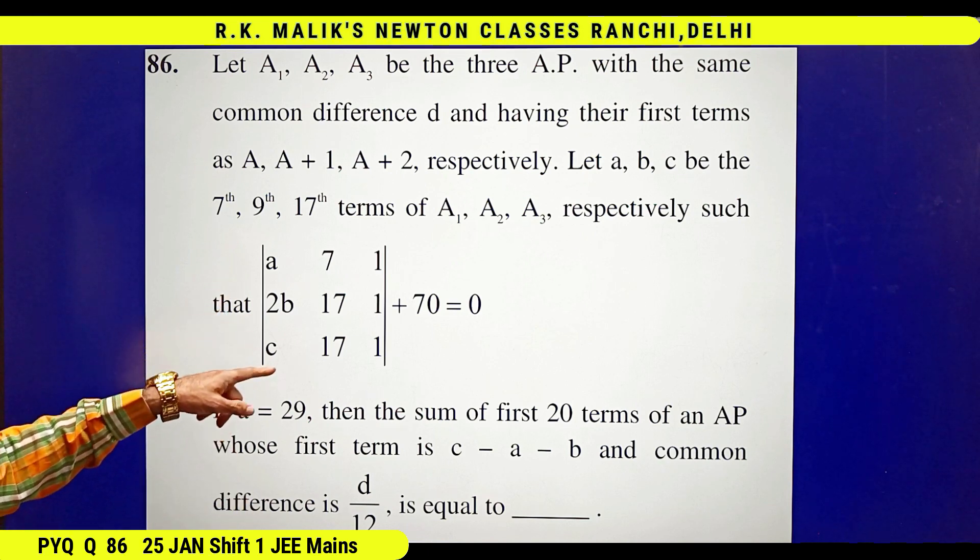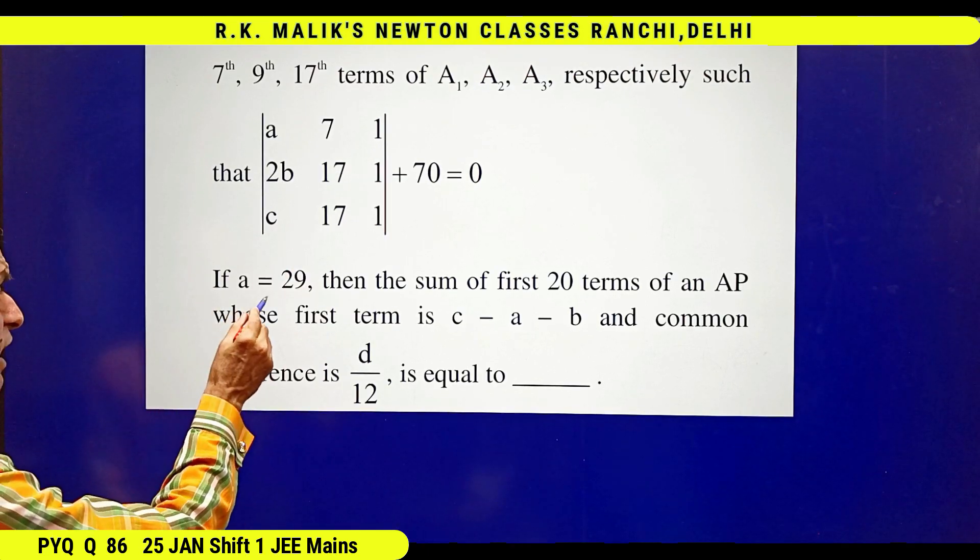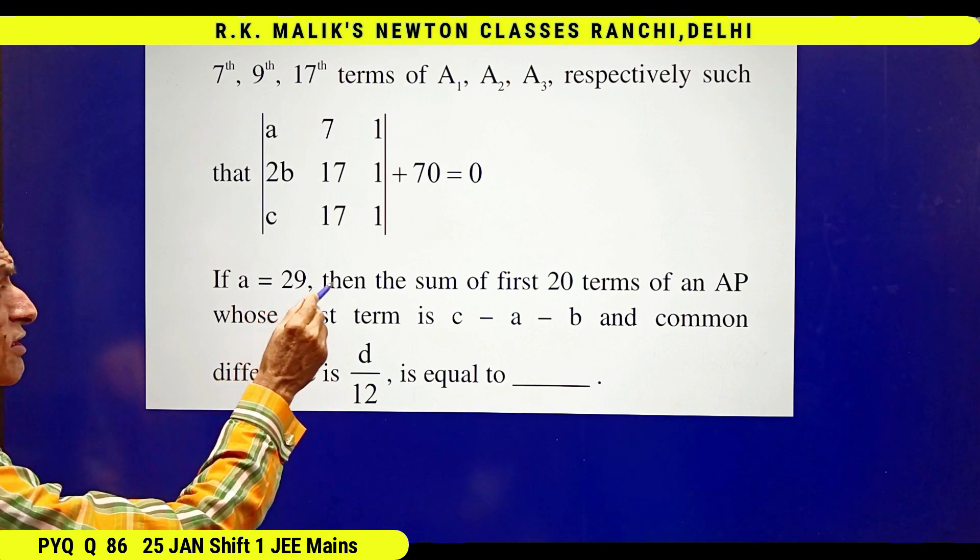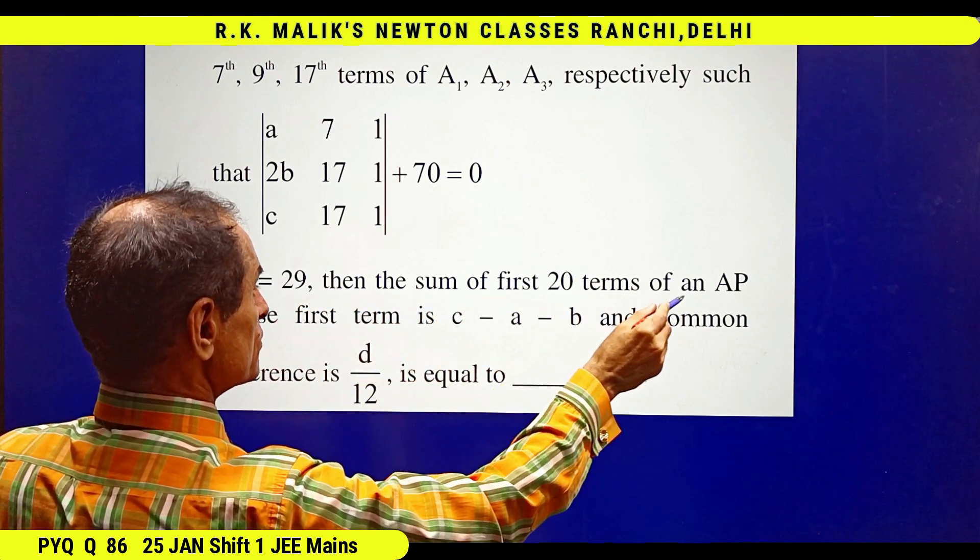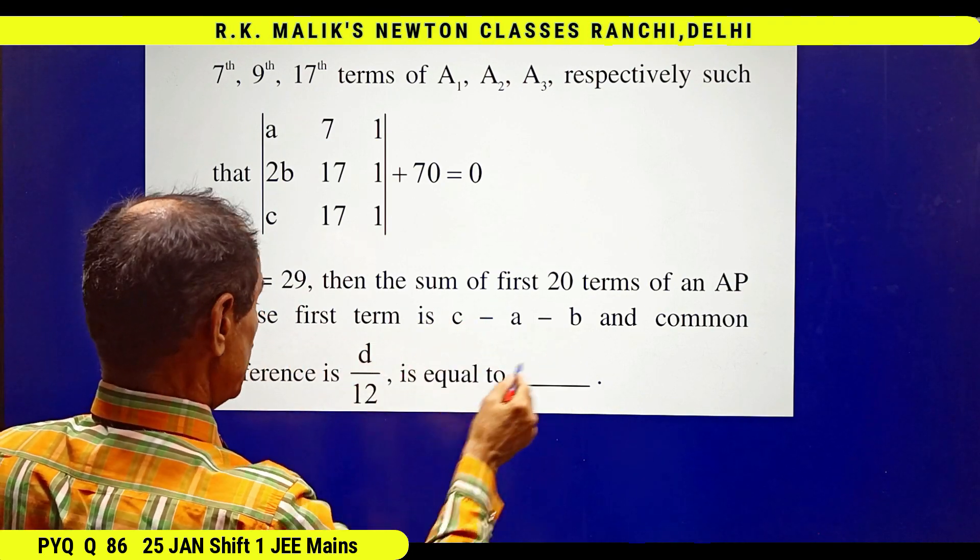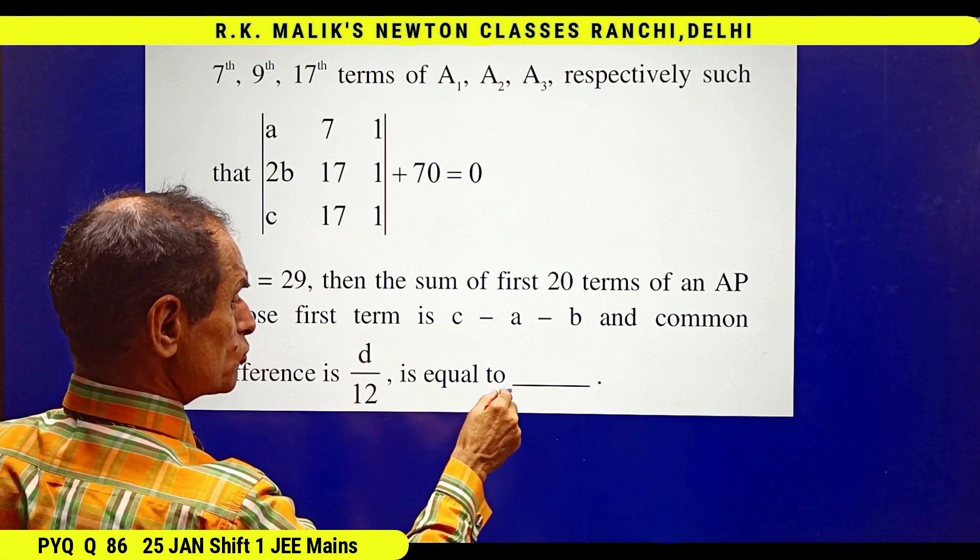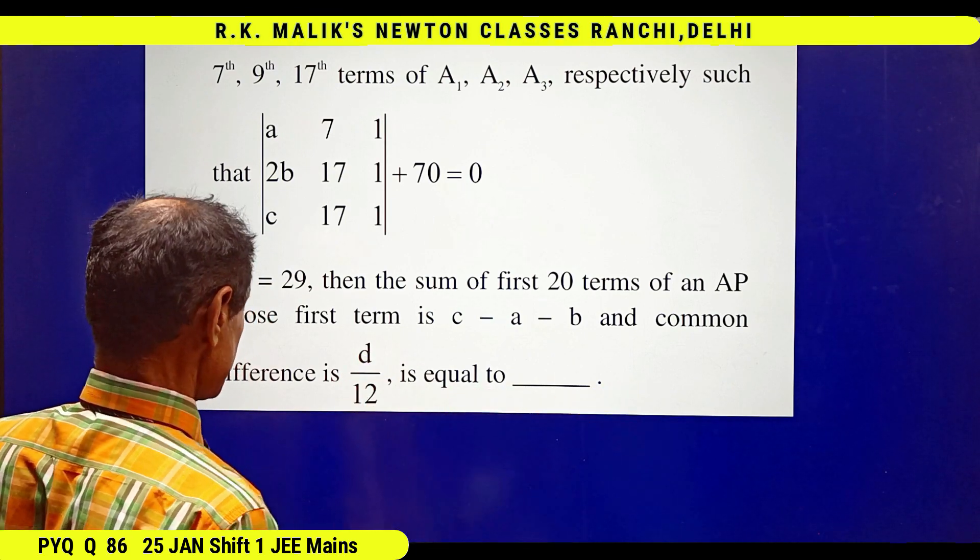That is a, b, c satisfies this equation. Then it is given that if a is 29, then the sum of first 20 terms of an AP whose first term is c minus a minus b and whose common difference is D by 12 is equal to blank. You have to fill in the blank.